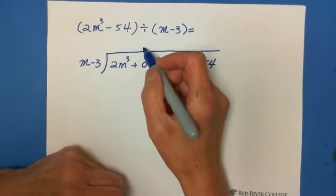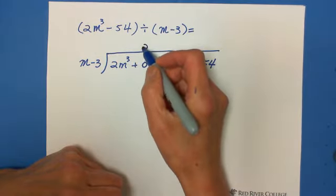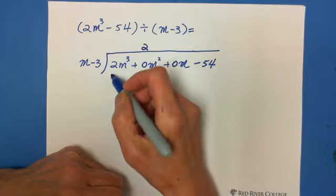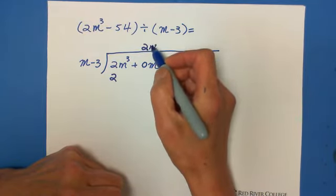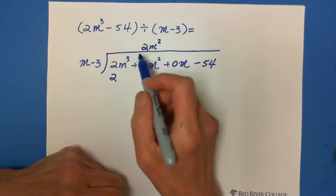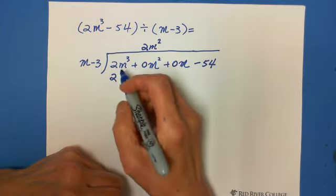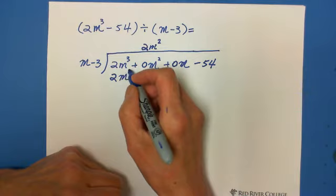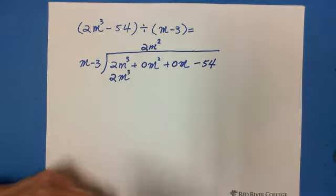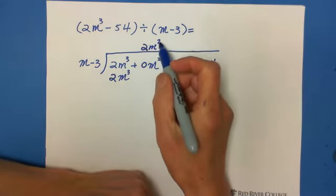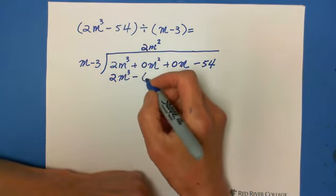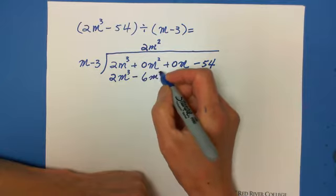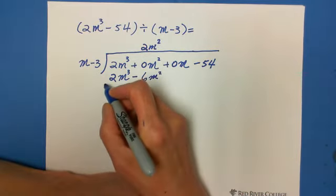1m times 2 equals 2. But this is m cubed. That's why we need to multiply m squared. So 2m squared multiplied by m equals 2m cubed. The second term is 2m squared multiplied by negative 3 becomes negative 6m squared. And subtract.